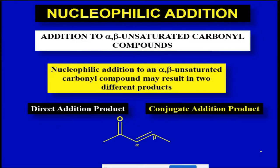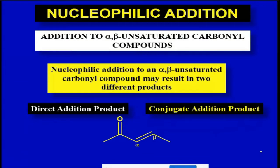We discussed the dienes case before, where we talked about 1,2-addition or 1,4-addition. When we talk about addition, there will be two atoms attached. If we do 1,1-addition, then we will have a negative charge, and a neutral molecule will not become an anion — so that anion will be quenched by any proton or solvent. This gives a completely added molecule, or 1,2-addition.